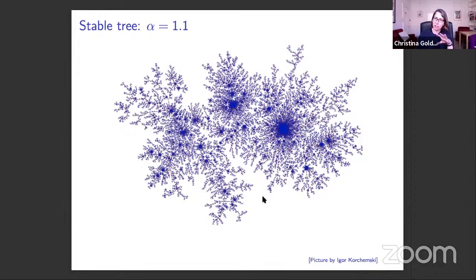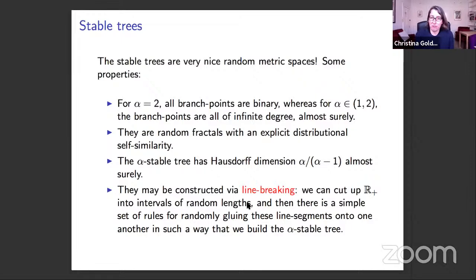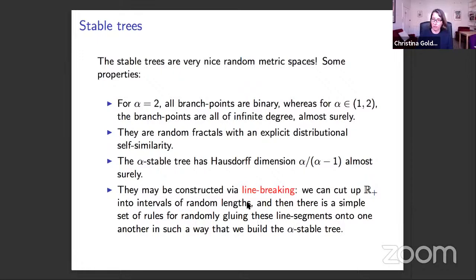The alpha-stable trees are extremely nice random metric spaces. For alpha equals two, all branch points are binary; for alpha between one and two, all branch points are of infinite degree. These are beautiful random fractals with explicit distributional self-similarity. The alpha-stable tree has Hausdorff dimension alpha/(alpha-1) almost surely. They can be constructed via line-breaking constructions, cutting R+ into intervals of random lengths and gluing them together.